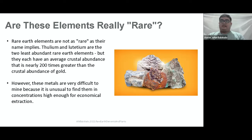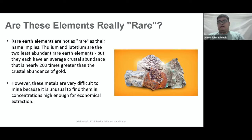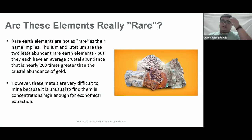However, why are they called rare earths? These metals are very difficult to mine because it is unusual to find them in concentrations high enough for economical extraction. The most abundant rare earth elements are cerium, yttrium, lanthanum, and neodymium. They have an average crustal abundance similar to commonly used industrial metals such as chromium, nickel, zinc, molybdenum, tin, tungsten, and lead. But same as the whole family of rare earths, they are rarely found in an extractable concentration.